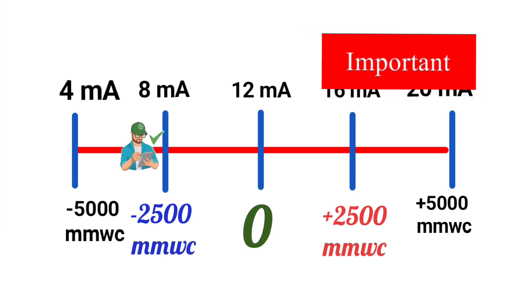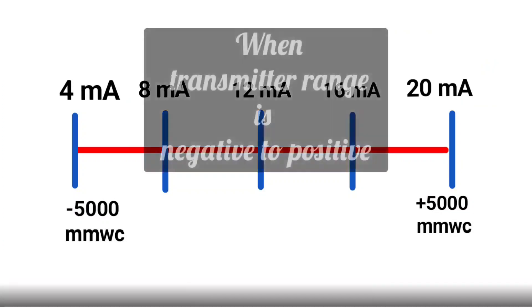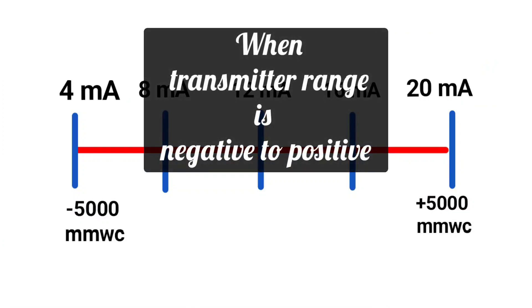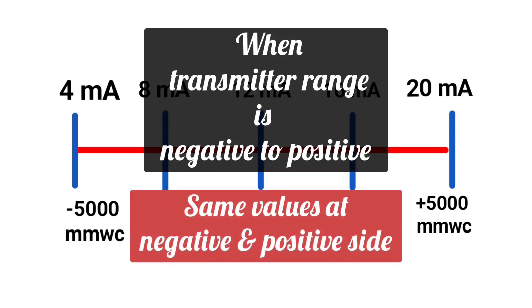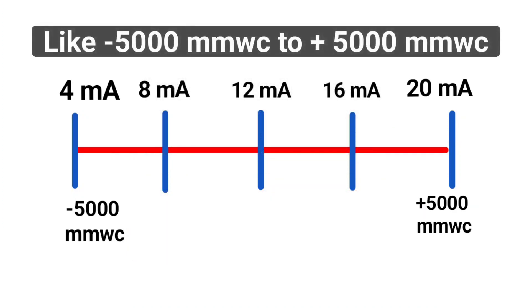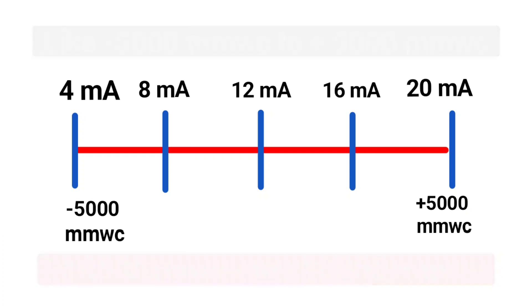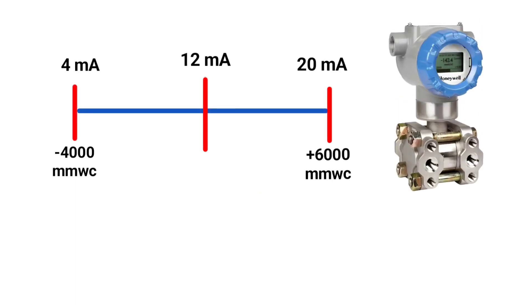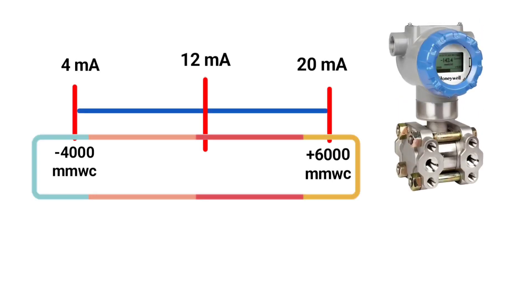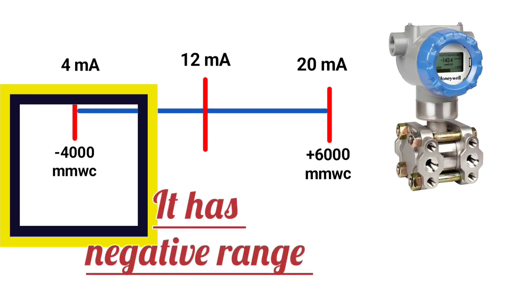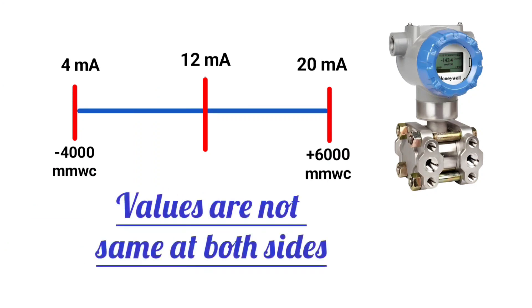One more important point to note: when the range of the transmitter goes from negative to positive, and the negative and positive values are the same — like minus 5000 mmWC to plus 5000 mmWC, or minus 10000 mmWC to plus 10000 mmWC — at 0, you will get 12 milliampere. But if the range is minus 4000 mmWC to plus 6000 mmWC, then at 0 you will not get 12 milliampere, because the values on both sides are not the same.